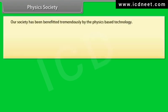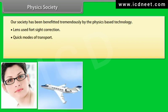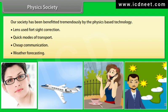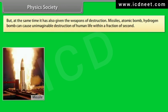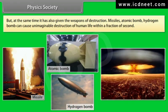Physics and society: our society has been benefited tremendously by physics-based technology. Lenses used for sight correction, quick modes of transport, cheap communication, and weather forecasting are some new dimensions of progress due to physics. But at the same time, it has also given us weapons of destruction — missiles, atomic bombs, and hydrogen bombs — which can cause unimaginable destruction of human life within a fraction of a second.